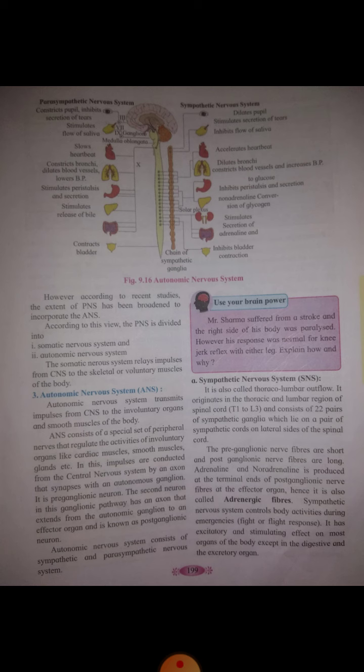Adrenaline and noradrenaline hormones are produced at the terminal ends of the postganglionic nerve fibers at the effector organs. Hence, they are called adrenergic nerve fibers.